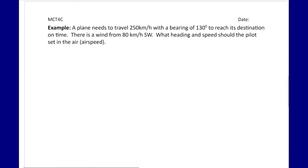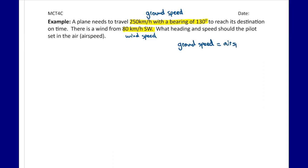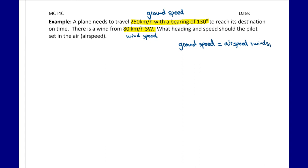Now let's look at an application problem. A plane needs to travel 250 km/h with a bearing of 130 degrees to reach its destination, and there is a wind speed of 80 km/h southwest. What heading and speed should the pilot set? We have two vectors: the ground speed (actual travel) and the wind speed. The relationship is: ground speed = air speed + wind speed, so air speed = ground speed minus wind speed.